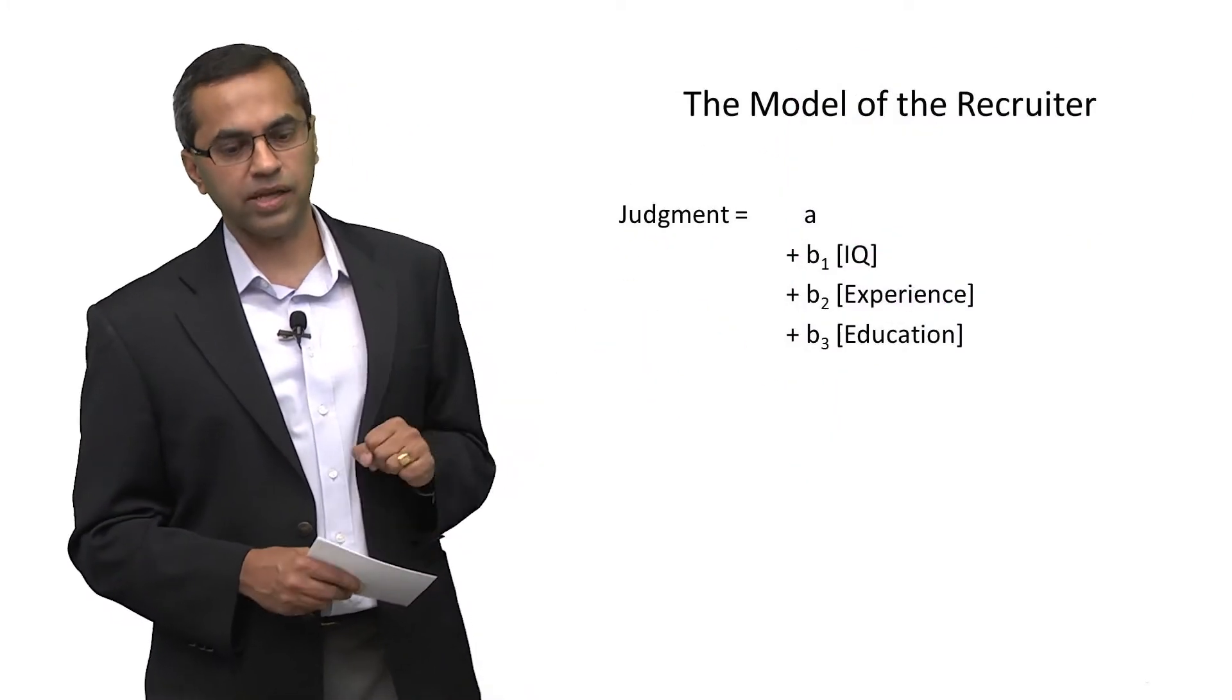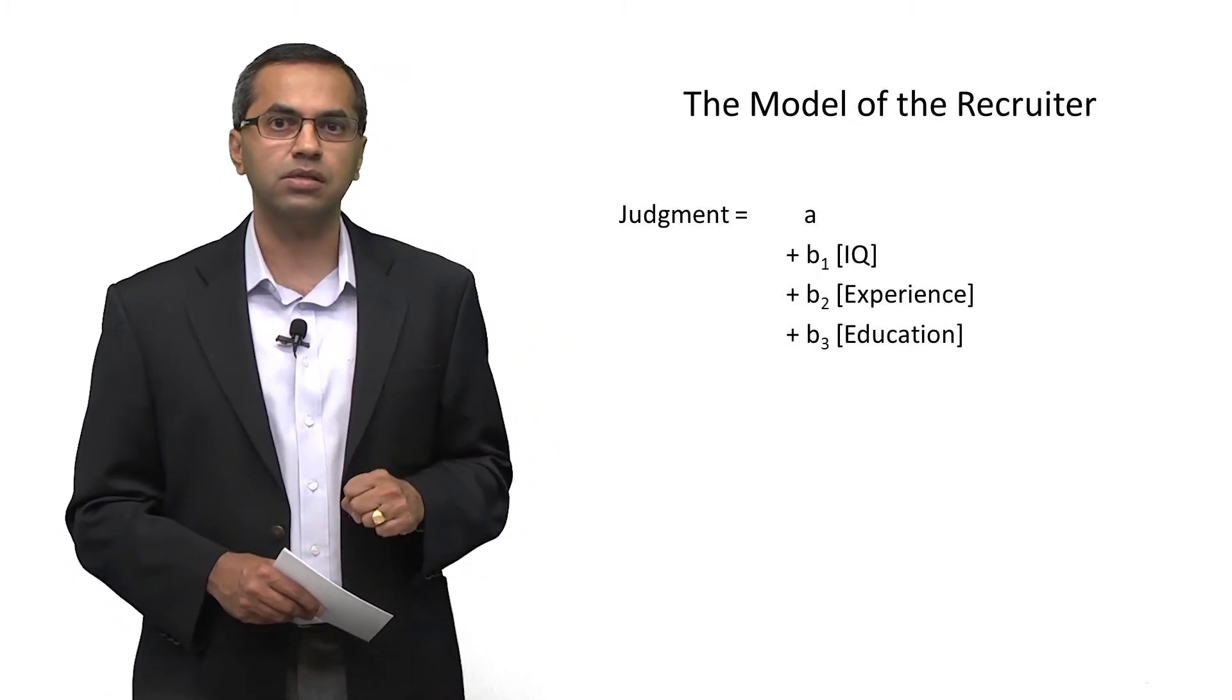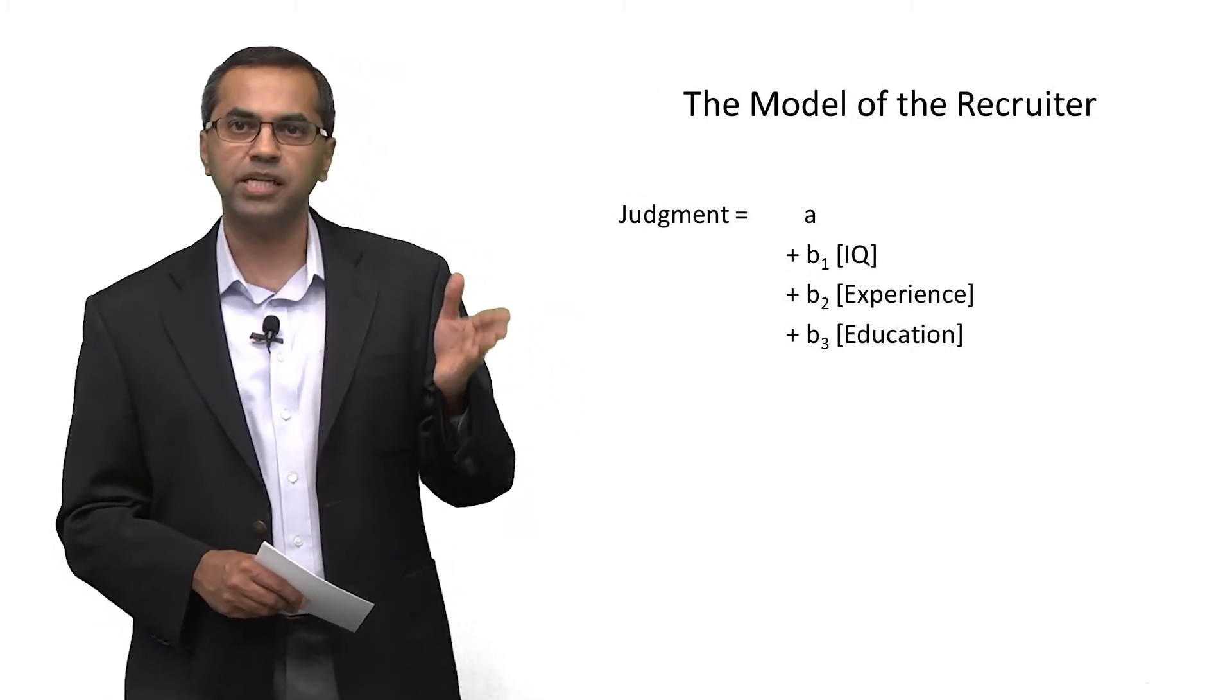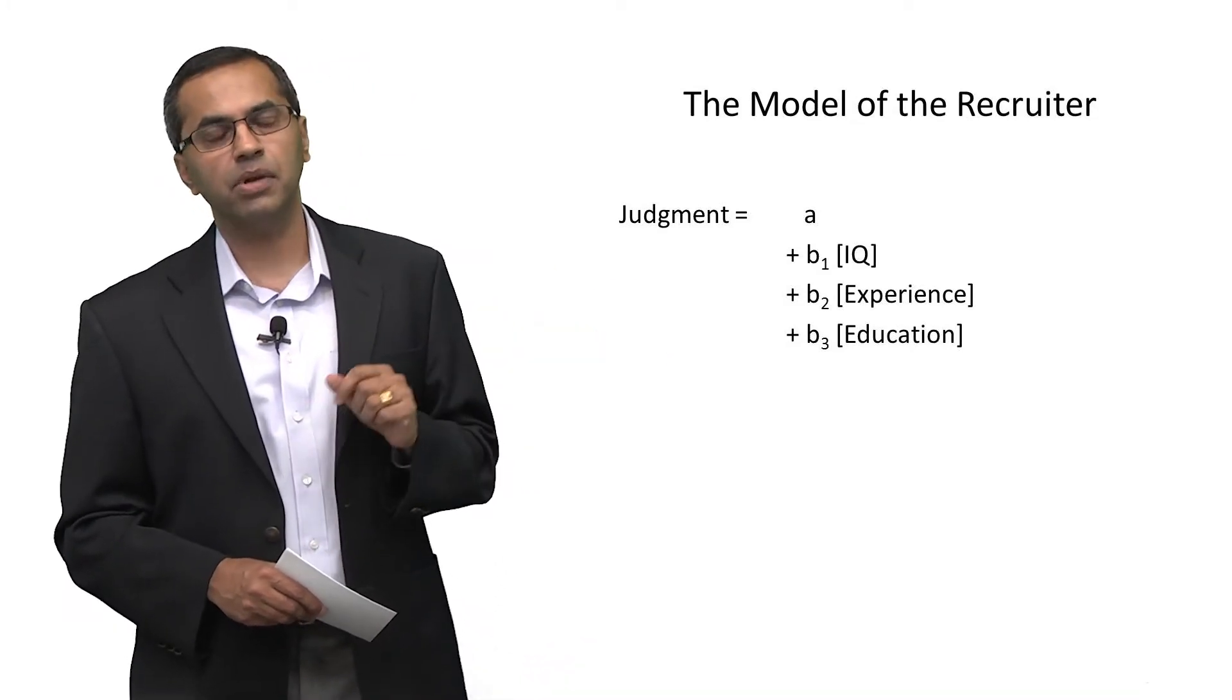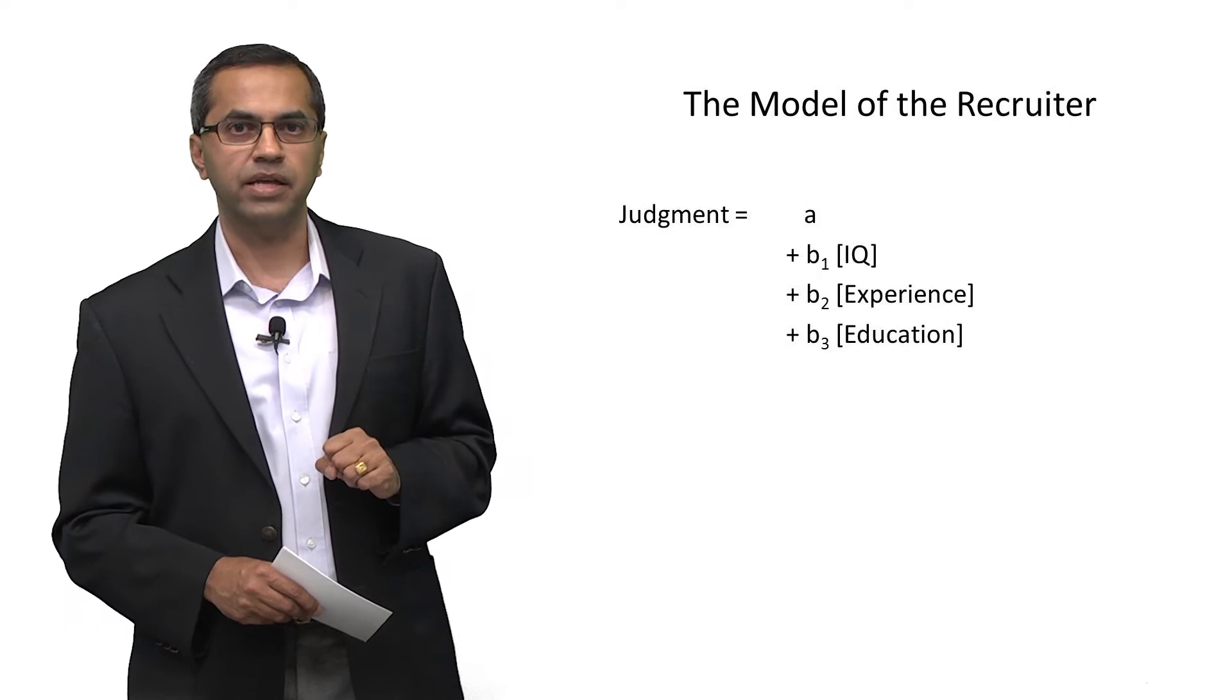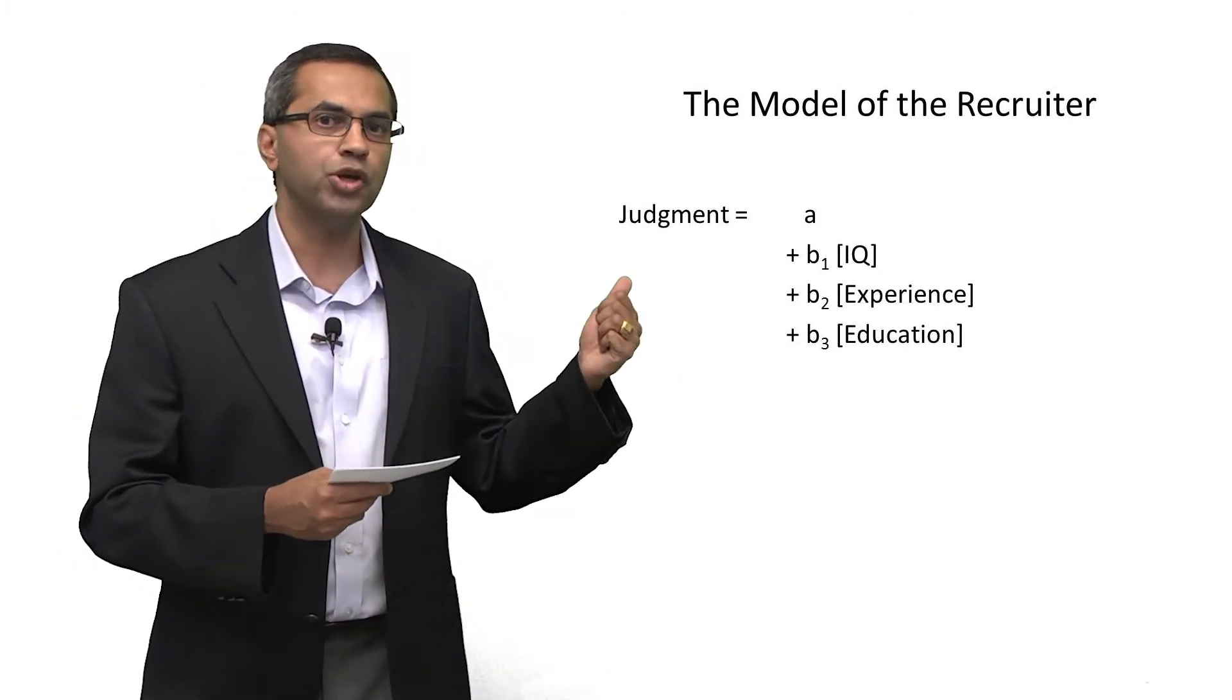This is what the equation might look like. It might actually say that judgment is some A, a constant, plus some B1 multiplied by the IQ score, plus B2 multiplied by experience, plus B3 multiplied by education. What is this? This is a model of your judgment.